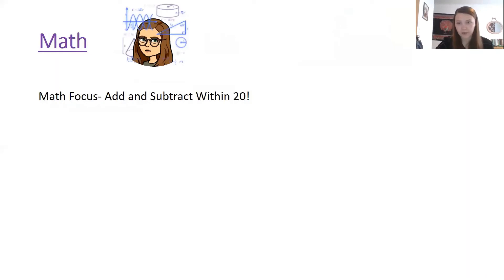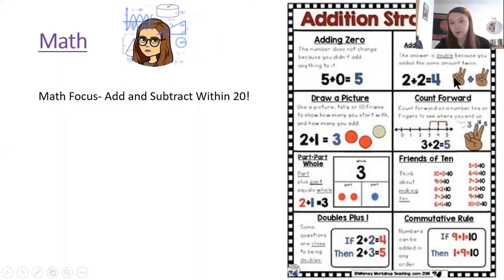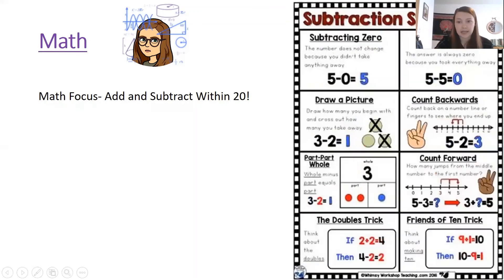All right and today our math focus and this whole week our math focus is going to be adding and subtracting within 20 which is a skill that we spent lots of time on in first grade. So remember some of our addition strategies are using doubles, drawing a picture to help us add, counting on, using part part whole or charting it, making a 10, using doubles plus one, or the commutative property which is when we just take our addends and switch them and still get the same whole. And our subtraction strategies were very similar: we can draw a picture, we can count backwards, we can also use part part whole or charting it, and we can count on using doubles and we can make a 10 when subtracting as well.